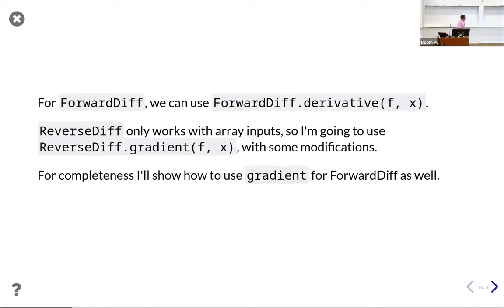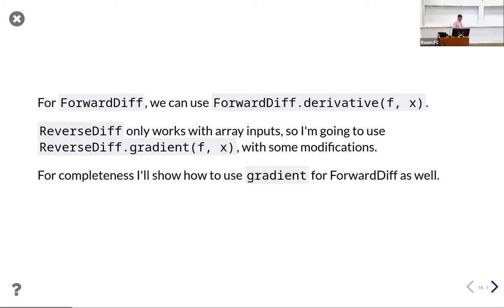For ForwardDiff, we're going to use ForwardDiff.derivative, give it a function f, and then give it a point to evaluate that derivative at — x. That's for the univariate case. ReverseDiff really only works with array inputs — it's designed for array functions — so we'll use the dot gradient function for our scalar function, but it's just going to be an array of one. So derivative and gradient are the same thing here.